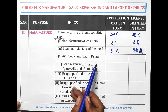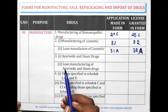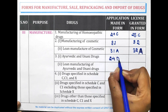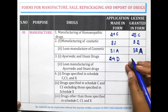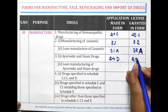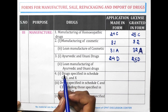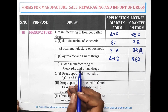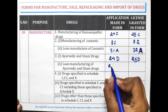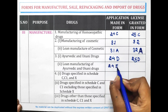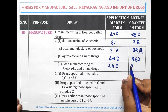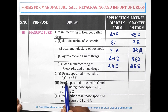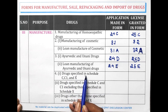For Ayurvedic and Yunani drugs manufacturing, Form 24E is filled and the license is granted in Form 25E. For loan manufacturing of Ayurvedic and Yunani drugs, Form 24E is also filled and the license is granted in Form 25E.